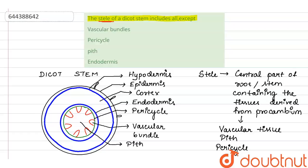Now if we see the options given: vascular bundle is part of stele, pericycle yes, pith also yes. So which is not part of stele in dicot is endodermis.